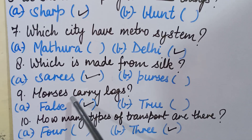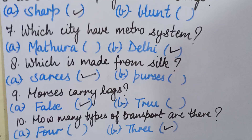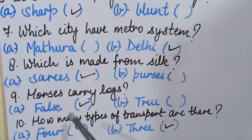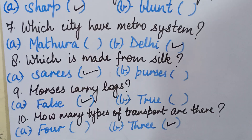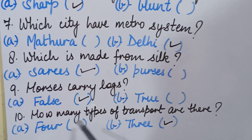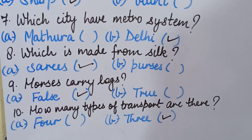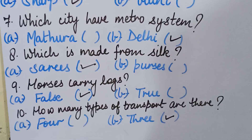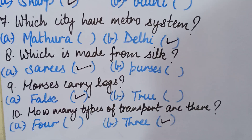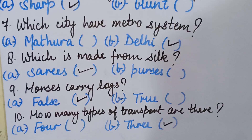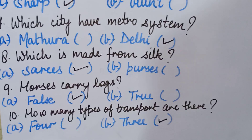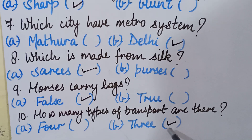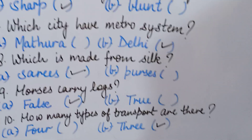Ninth question: horses carry logs — false or true? The correct answer is false, because horses don't carry logs. Tenth question: how many types of transport are there — four or three? The correct answer is three: land transport, water transport, and air transport. So we will put a tick in front of three.